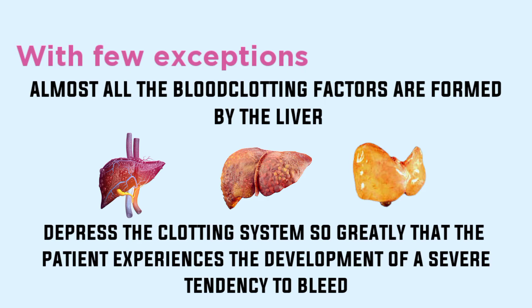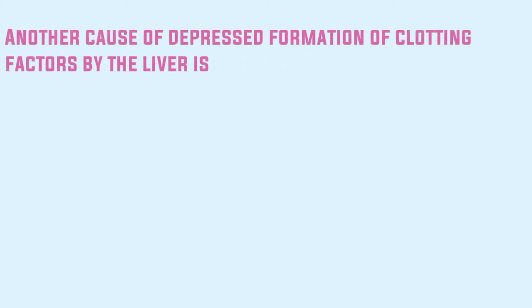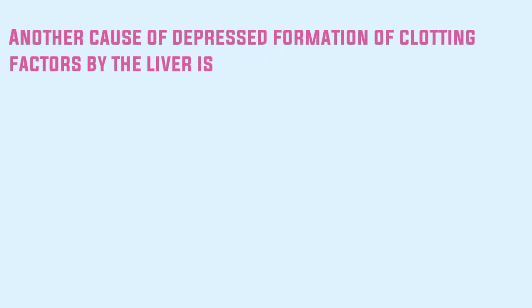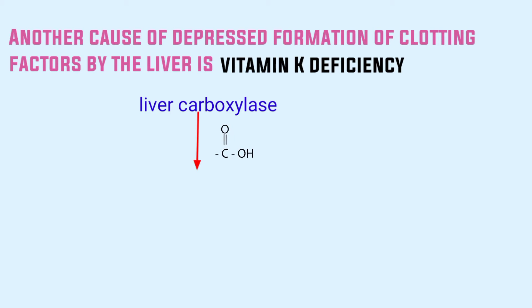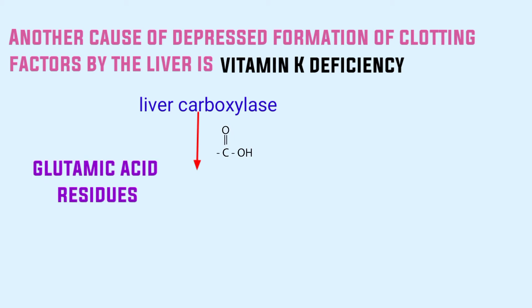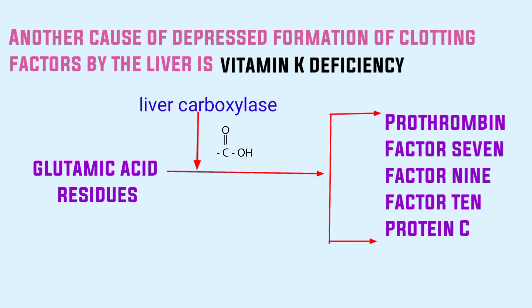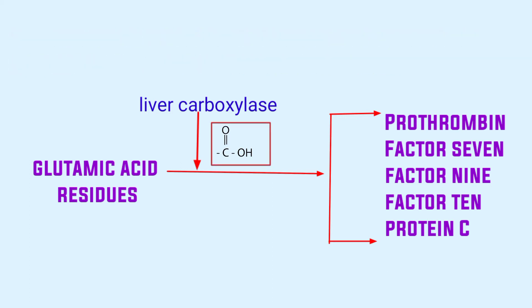Liver disease can so greatly depress the clotting system that the patient develops a severe tendency to bleed. Another cause is vitamin K deficiency. Vitamin K is an essential factor for a liver carboxylase that adds a carboxyl group to glutamic acid residues on five important clotting factors: prothrombin, factor 7, factor 9, factor 10, and protein C.